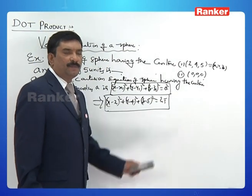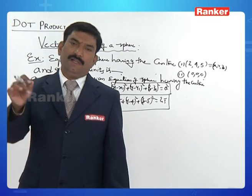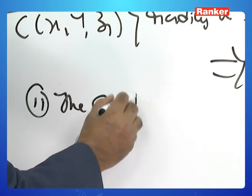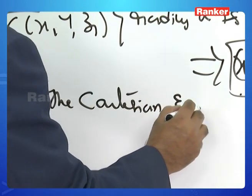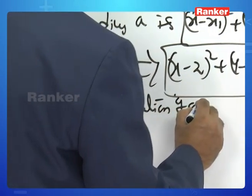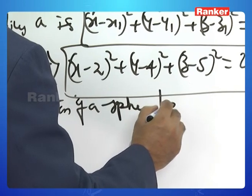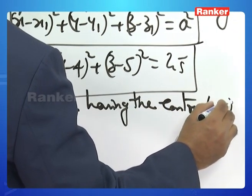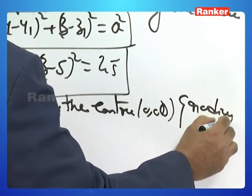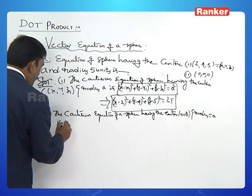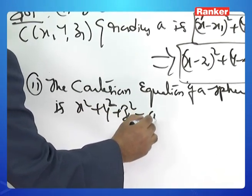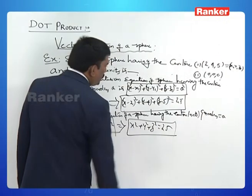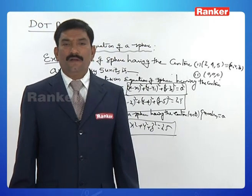For the second case: the Cartesian equation of a sphere having center (0, 0, 0) and radius a is x² plus y² plus z² equals a². So for radius 5: x² plus y² plus z² equals 25. This is the Cartesian equation of a sphere having center (0,0,0) and radius 5.